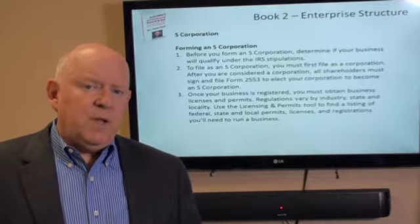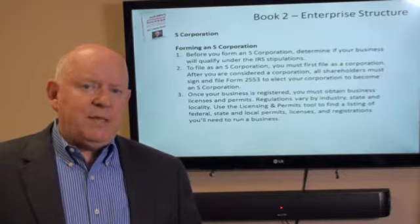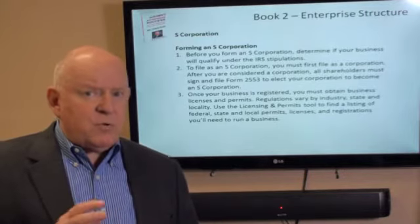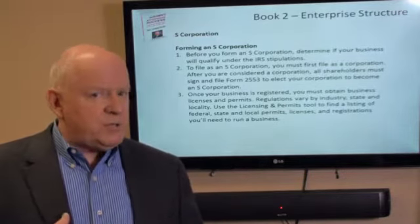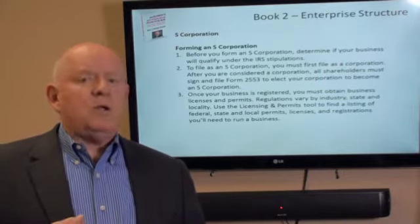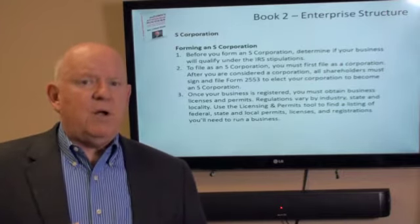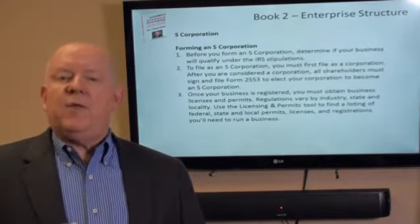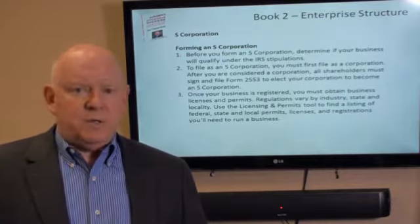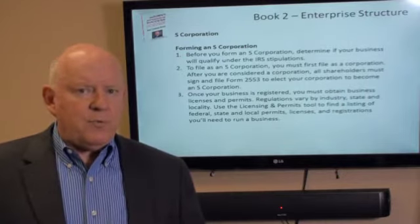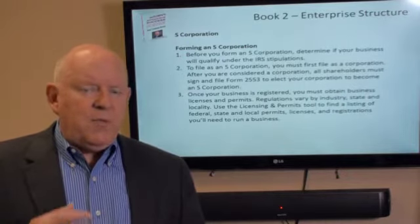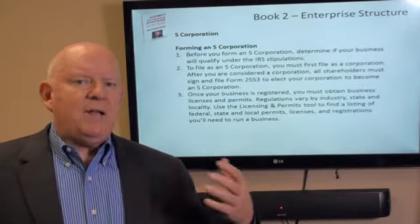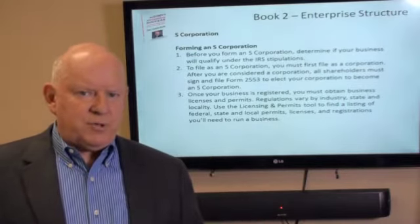You're going to receive a K-1 for $5,000. What that means is, regardless of whether the corporation distributes money to us, we're going to receive our share of the profits or losses generated by the corporation. That's the big difference between an S-Corporation and a C-Corporation.